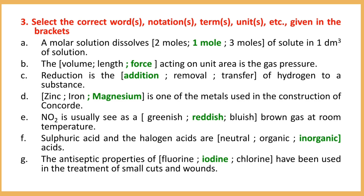Number F: Sulfuric acid and the halogen acids are inorganic acids. The halogen acids are HCl, HBr, and HI. Number G: The antiseptic properties of iodine have been used in the treatment of skin worms.